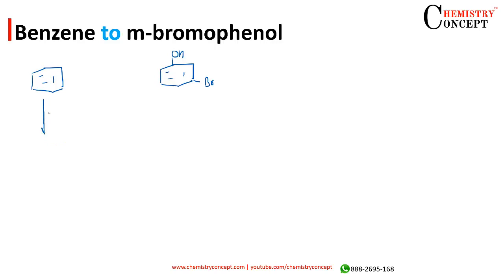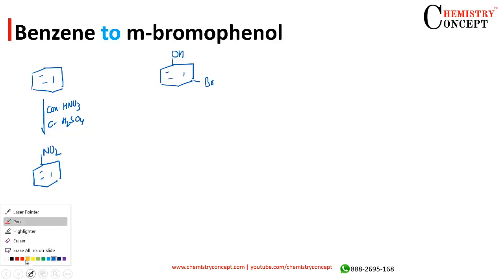First of all, we will do nitration of benzene by treating it with a mixture of nitric acid and sulfuric acid. We will introduce an NO2 group here. After introducing the NO2 group,